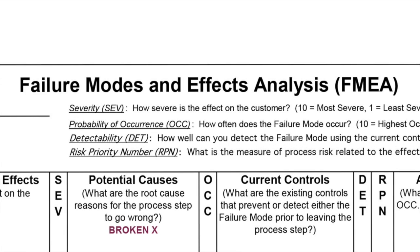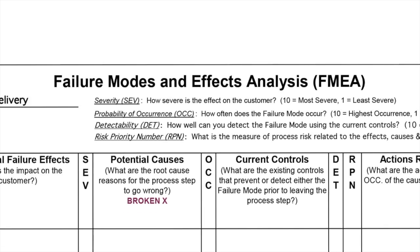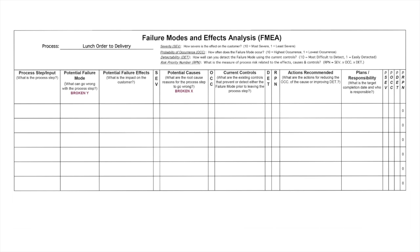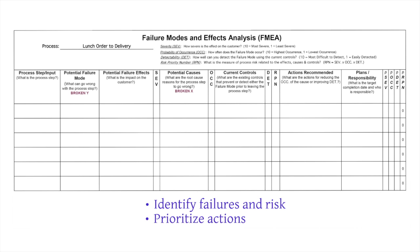One of the key tools used in the analyze phase is an FMEA, which stands for Failure Modes and Effects Analysis. The purpose of an FMEA is to identify potential ways that a process can fail and the risk each kind of failure might have. It also helps prioritize actions to reduce the chance of failure and to focus on prevention.